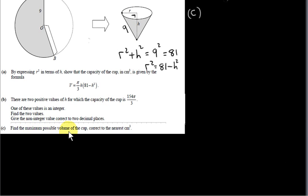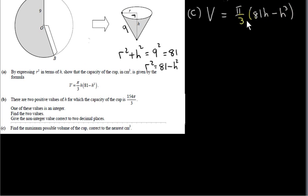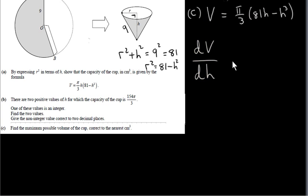Find the maximum possible volume of the cup correct to the nearest centimetre cubed. V equals pi over 3 times H times 81 minus H squared. Multiplying H in, we get pi over 3 times 81H minus H cubed. We want the value of H that maximizes V — this is a differentiation problem. We set dV/dH equal to zero and solve.